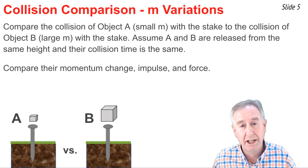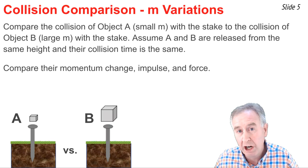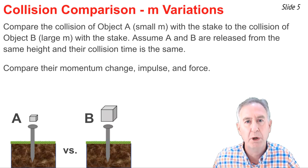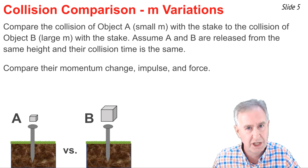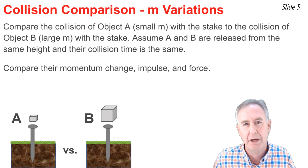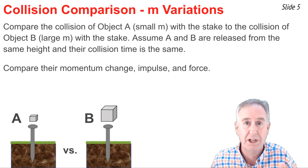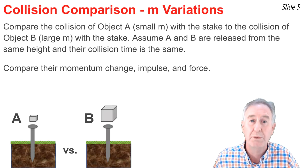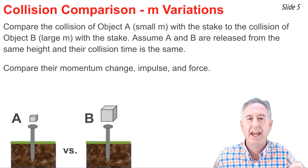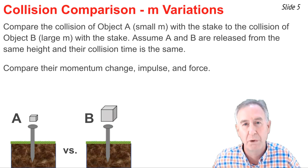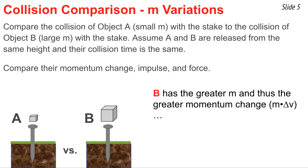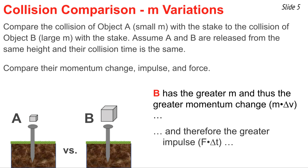Let's consider this example in more detail. Object A is the small mass object; B is the large mass object. Assuming they are released from the same height and come to a stop upon collision with the stake, the delta V — the change in velocity — will be the same for each. Assuming also that the collision time is the same for each object, the only difference is their mass and the resulting force. Since B has the greater mass, it has the greater momentum change, and since momentum change equals impulse, B will experience the greater impulse. Since the collision time delta T is the same, object B must experience the greater force when it hits the stake.